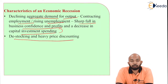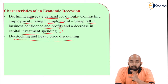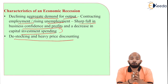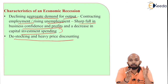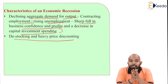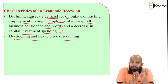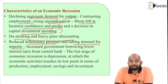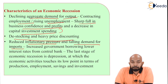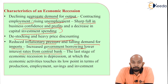De-stocking and heavy price discounting occur during recession. If recession comes in, there will be heavy discounts made available to people. For example, a TV worth one lakh rupees being sold at 10,000 or 5,000 rupees is an example of heavy discounting — though hypothetical, it gives an idea of how sharp discounts can be. Reduced inflationary pressure and falling demand for imports occur, meaning growth is very low. There is also increased government borrowing from the central bank at lower interest rates to meet working capital required for daily funding.